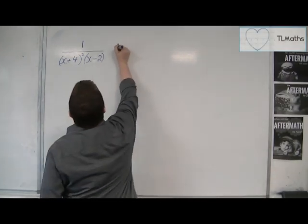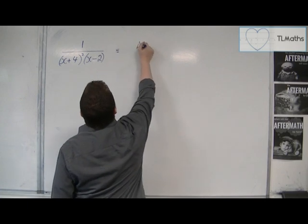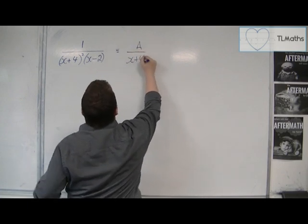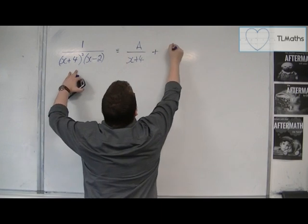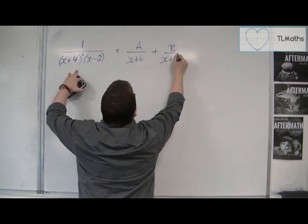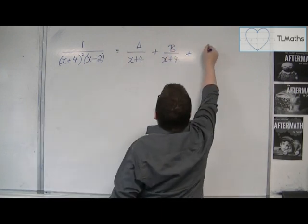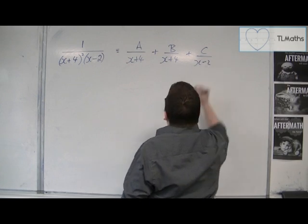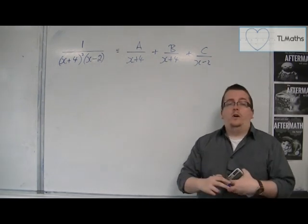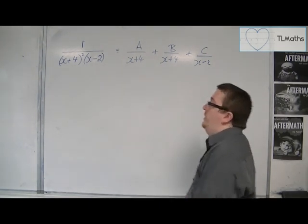that we would go about this by writing it as a over x plus 4. Now we've got two brackets of x plus 4, so we'd have to have another b over x plus 4 plus c over x minus 2. We've just seen an example of that in the previous video.